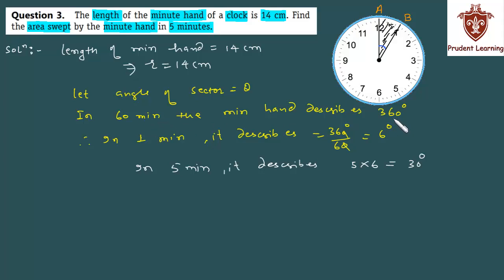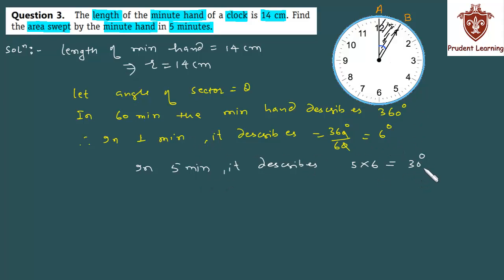Unitary method use ki hai: agar 60 minutes mein 360 degrees cover kar raha hai, to one minute mein 360/60 = 6 degrees. Aur five minutes mein 6 × 5 = 30 degrees. Ab sector ka angle bhi pata chal gaya — 30 degrees — aur radius pehle hi maalum tha — 14 cm. Area nikalna easy hai.